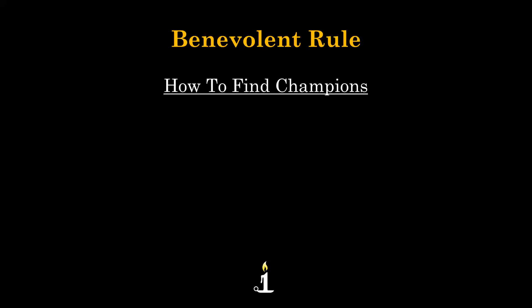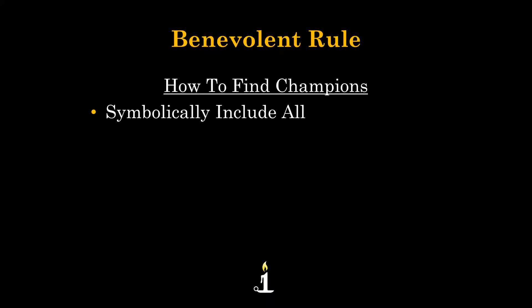As we look at the Olympics, we see some key things. First, you must symbolically include all. As a warrior, you must create a governing symbol which includes everyone. When we look at the Olympics, that's one of the first things we see — the symbol of the Olympics: five rings.